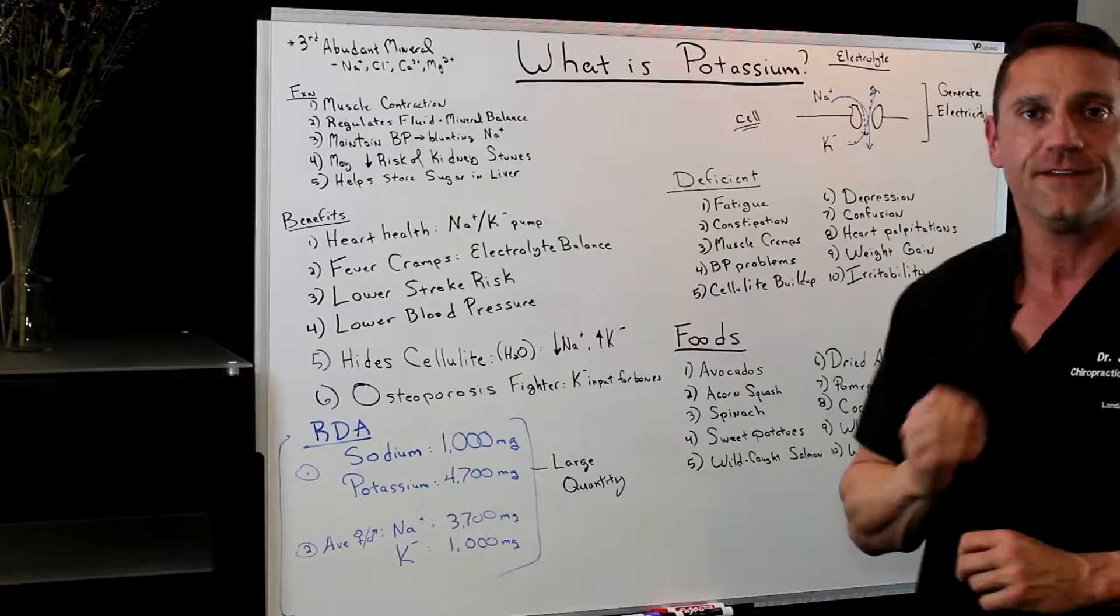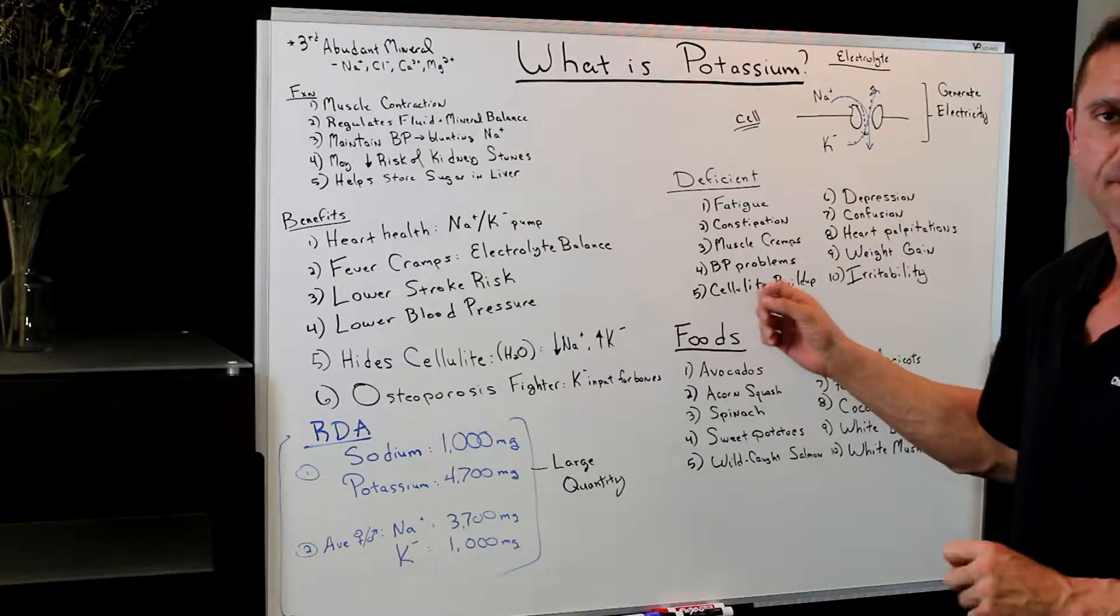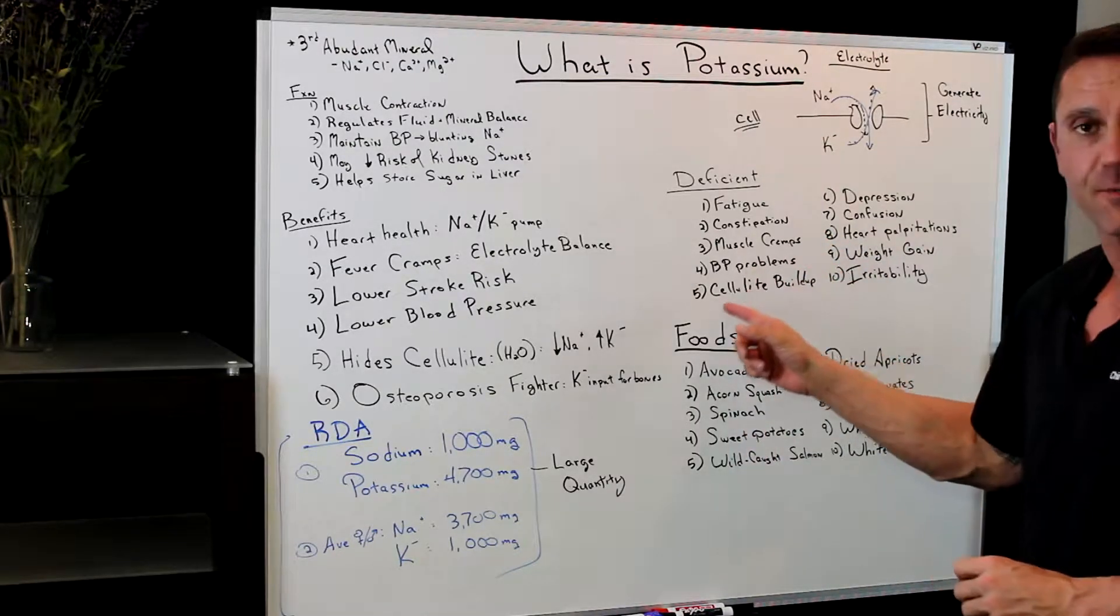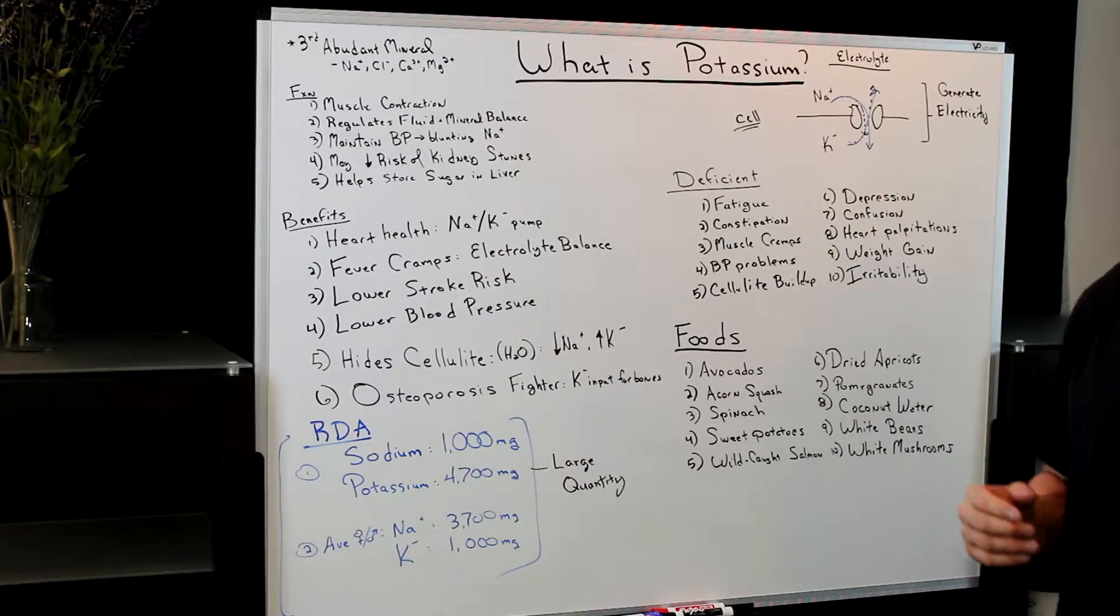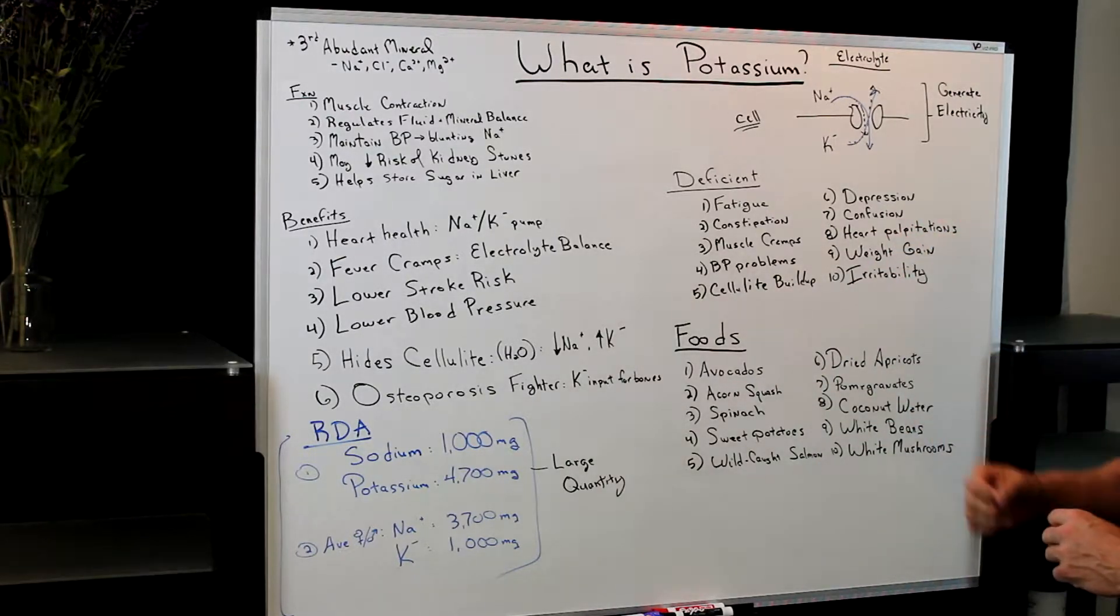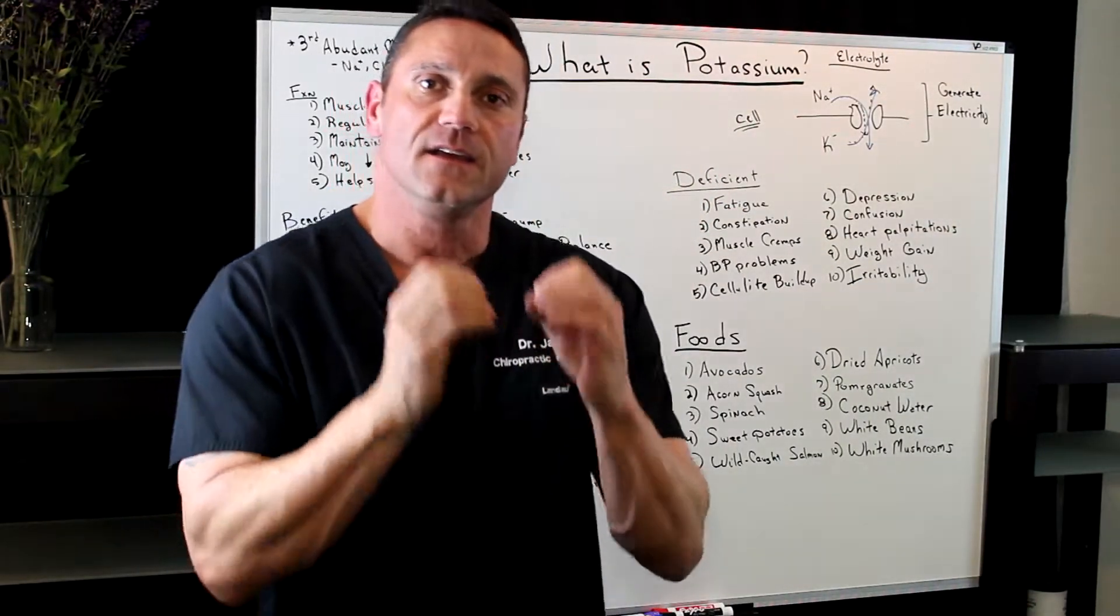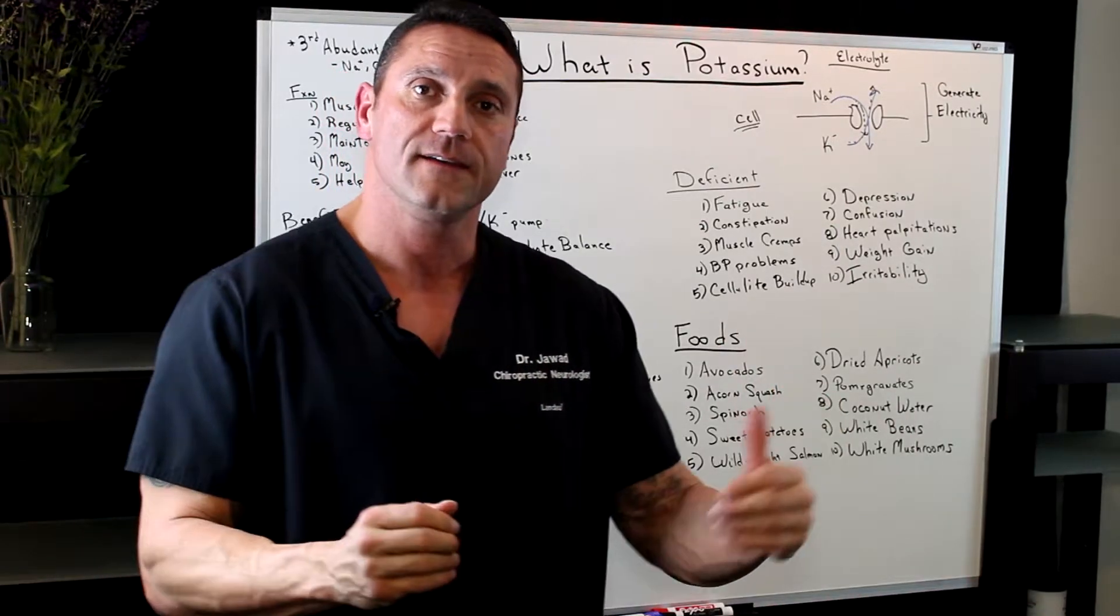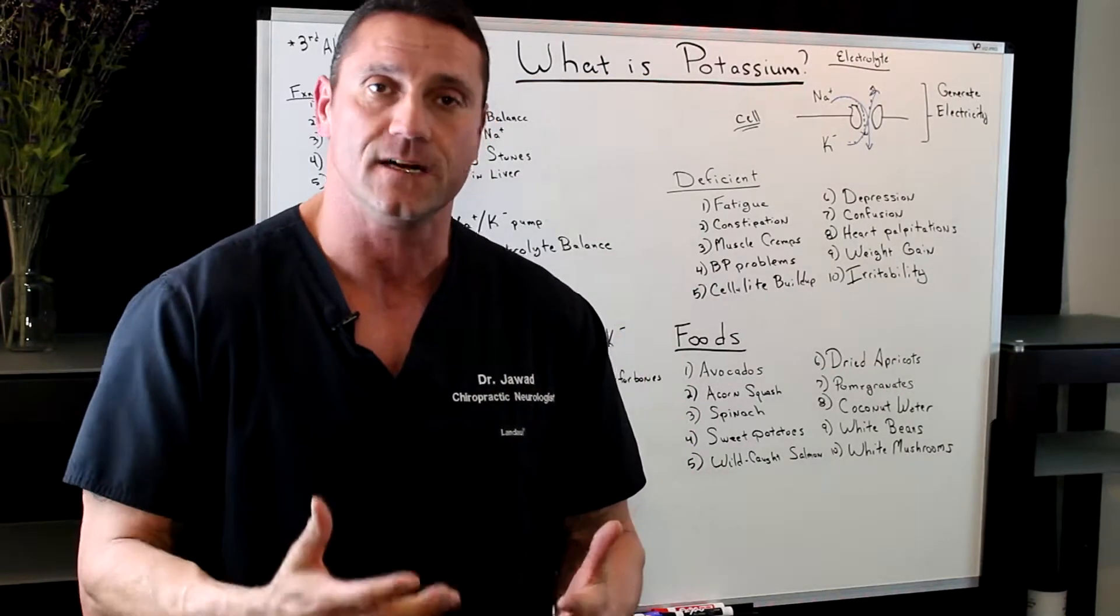So if you're deficient in potassium, you're going to experience fatigue, constipation, muscle cramps, blood pressure problems, cellulite problems, depression, confusion, heart palpitations, weight gain, irritability. All because potassium is essential for cells to work to help balance out the electrolytes, which the purpose of electrolytes is to generate electricity in our cell.